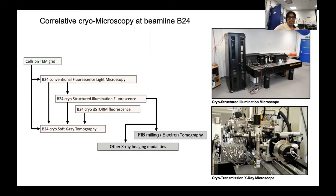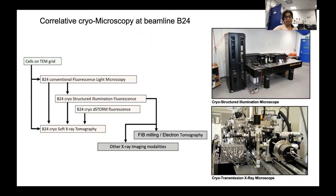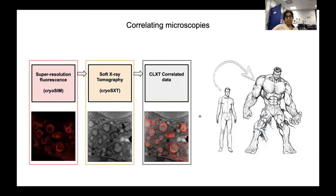At B24, cryo-SIM has been combined with a cryo-stage to hold vitrified samples grown on gold TEM grids to enable 3D cryo-SIM imaging. In SIM, thicker samples can be imaged over 10 micrometers in thickness. These techniques can also be used in conjunction with other modalities such as cryo-electron tomography and other x-ray imaging modalities. Both techniques are great on their own, but when used in combination they can give further details about cellular ultrastructure and its function.